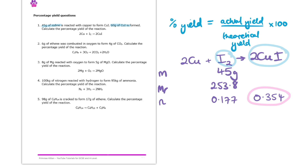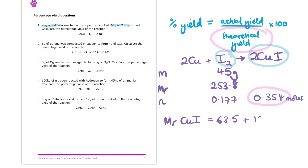And that there is my theoretical yield of copper iodide. In this question, we are told the actual yield of copper iodide as a mass. Since we've just worked out the theoretical yield in moles, I'd like us to work out the moles of copper iodide we actually get. To do this, we need the MR of copper iodide: 63.5 plus 126.9, giving us 190.4. So the moles of actual copper iodide is equal to the mass — 60 grams — divided by 190.4, which gives us 0.315 moles.